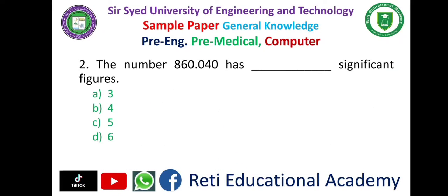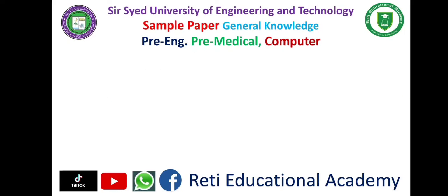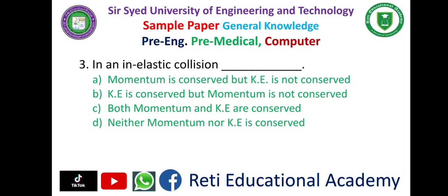Question number 2: The number 860.040 has dash significant figures — A. 3, B. 4, C. 5, D. 6. The correct answer is D: 6.